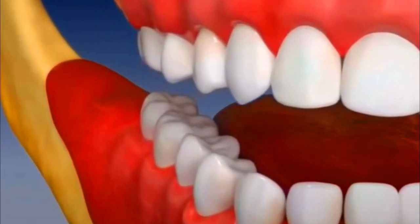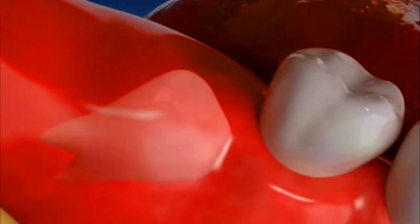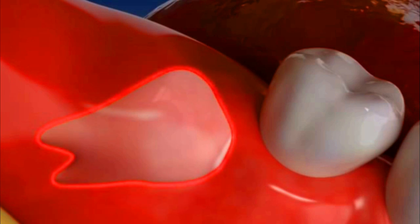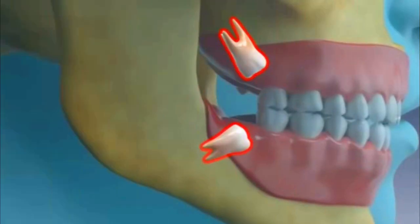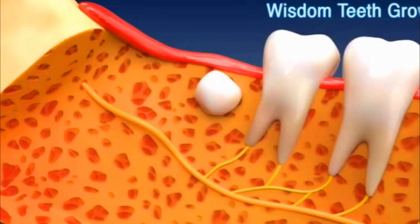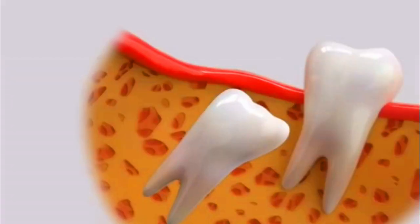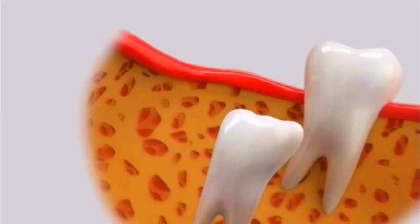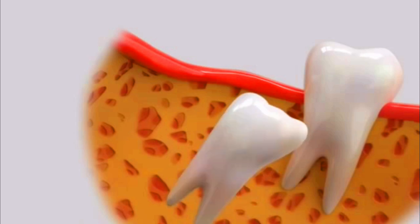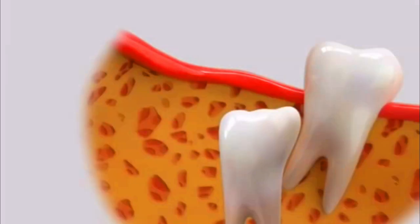Wisdom teeth, or the third molars, are the last teeth to develop and appear in the mouth. They usually erupt between ages 17 to 25; after 25 years, they usually don't erupt. A tooth that fails to erupt during its development is called an impacted tooth.